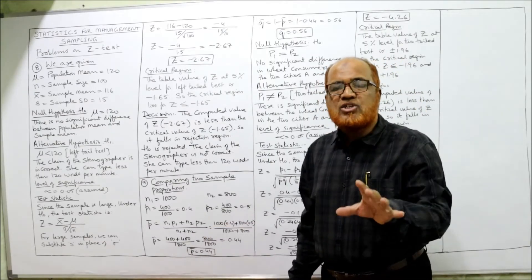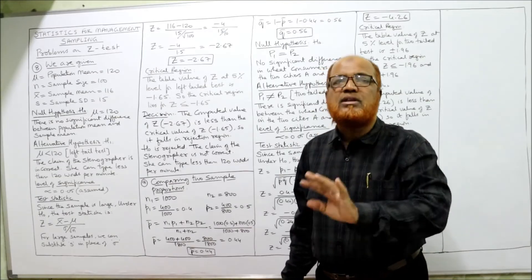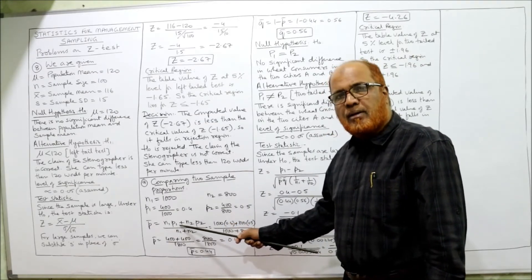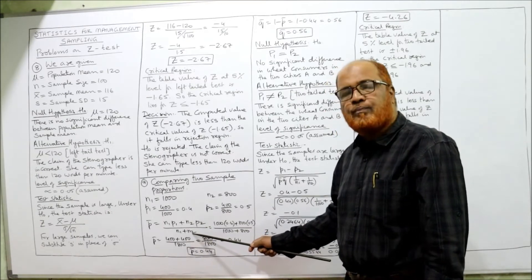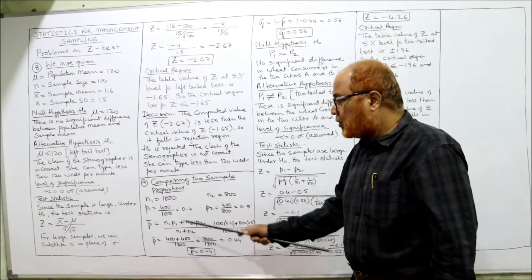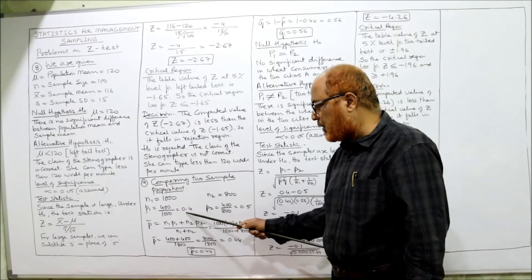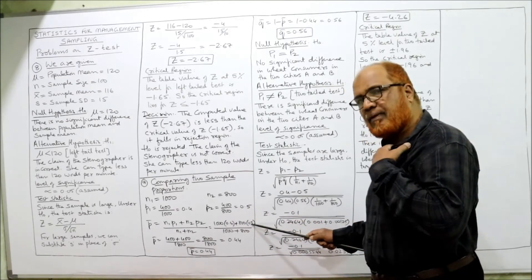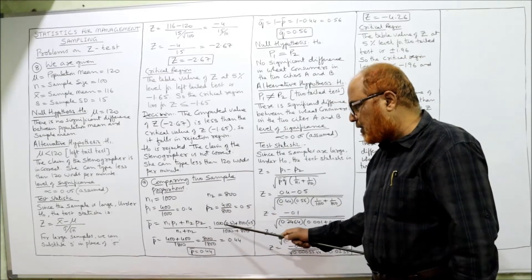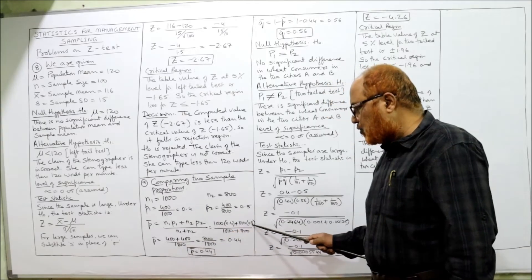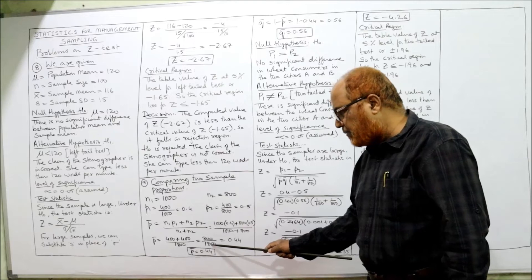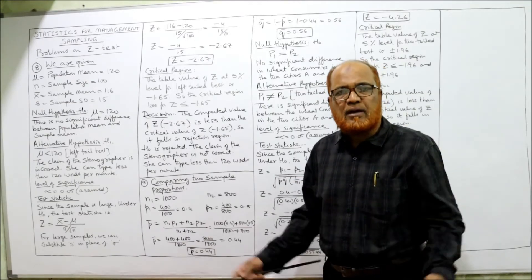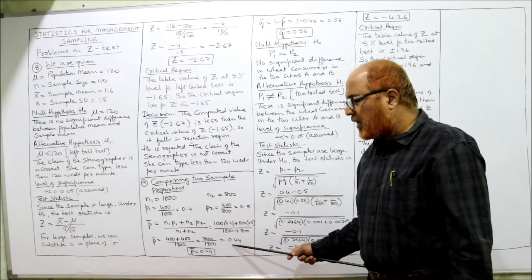Now P-bar, the average consumers of wheat in both towns, is calculated as N1*P1 plus N2*P2 divided by N1 plus N2. N1 is 1000, P1 is 0.4, so 1000 into 0.4 is 400. N2 is 800, P2 is 0.5, so 800 into 0.5 is 400. So 400 plus 400 is 800, divided by 1800, you get 0.44. So P-bar is 0.44, the average proportion of wheat consumers in both towns combined.